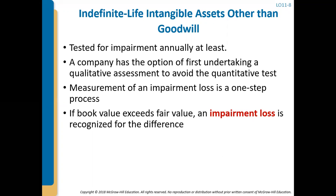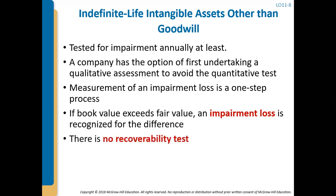A company has the option of first undertaking a qualitative assessment to avoid the quantitative tests. For goodwill, you can measure impairment loss with just a one-step process. If the book value exceeds the fair value, then an impairment loss is recognized for the difference. You don't have to do the recoverability test for goodwill.